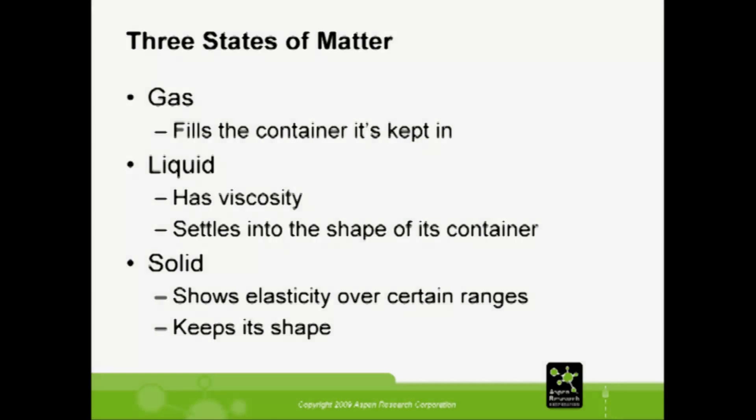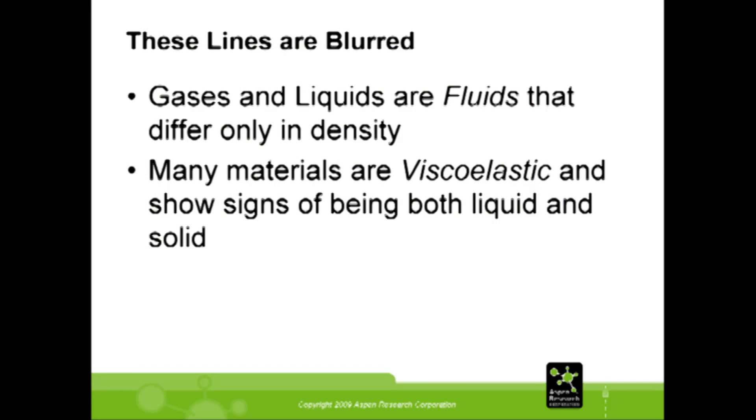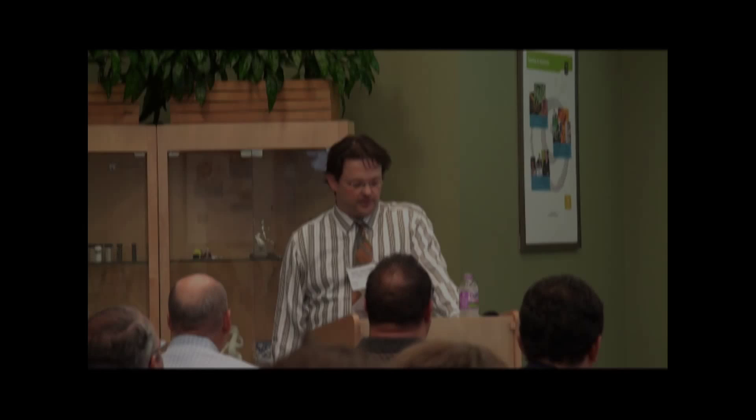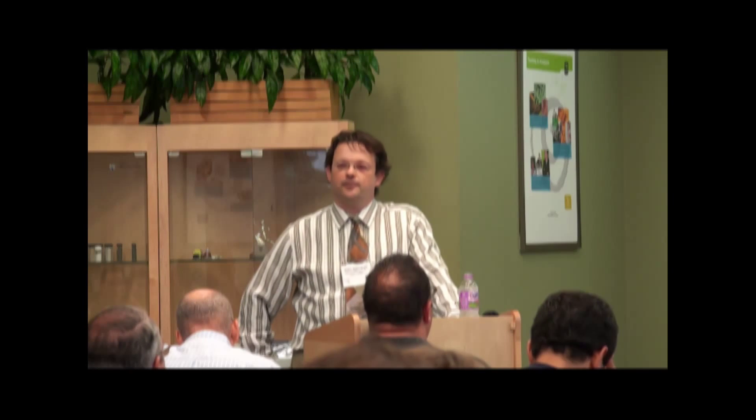Going back to basics: there are three fundamental states of matter — gas, liquid, and solid. As you advance in your education, the lines between these materials become blurred. Gases and liquids are generally considered fluids; in fluid mechanics you treat them more or less equally, the main difference being density. The lines between a solid and a liquid can also be blurred, and that's where you get into an area called viscoelasticity — where some materials show signs of being both solid and liquid at the same time.